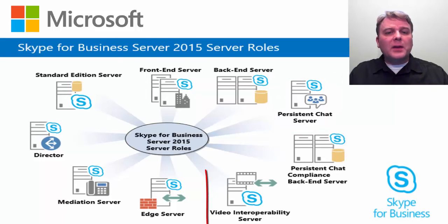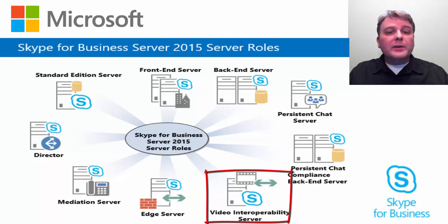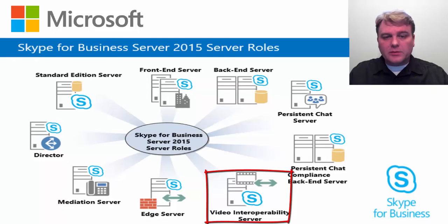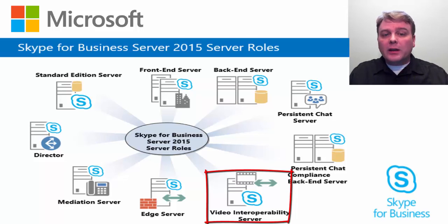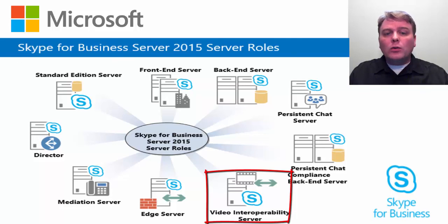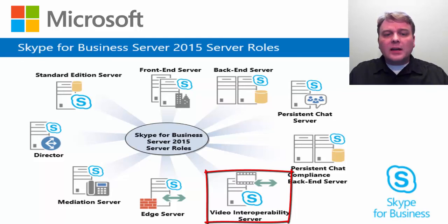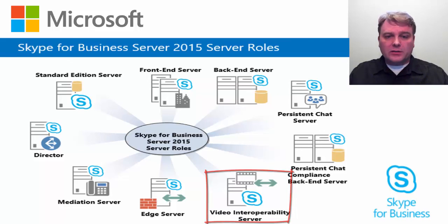Skype for Business Server now allows you to integrate with certain third-party video teleconferencing system solutions. The new server role that enables this video conferencing interoperability is the Video Interop Server, or VIS, which is currently implemented as a standalone server role available only for on-premise installations. A VIS acts as an intermediary between a third-party teleconference system and a Skype for Business Server deployment. For this release, VIS is focused on interoperability with Cisco and Tanberg video systems.